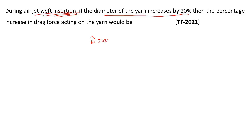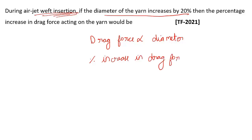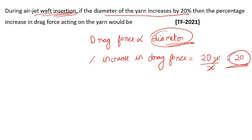Since drag force is directly proportional to diameter, the percentage increase in drag force equals the percentage increase in diameter. The diameter increases by 20%, so the drag force also increases by 20%. You just need to know the formula for drag force — pi × D × L — and how drag force is related to yarn diameter. If these concepts are clear, you can answer this question.